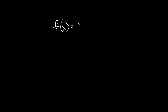Now let's talk about reflections. So if we had f of x is equal to the negative square root of x — we have a negative on the outside of the radical, so if it's on the outside, it reflects the graph across the x-axis. Same thing for cube root, fourth root graphs.